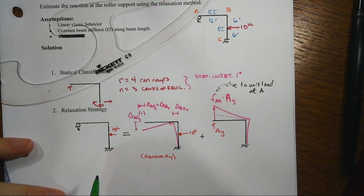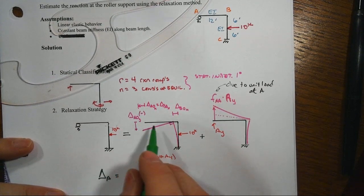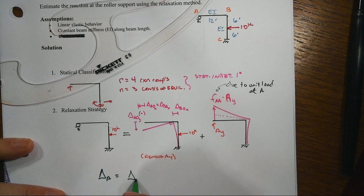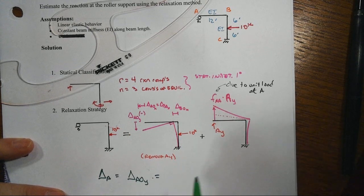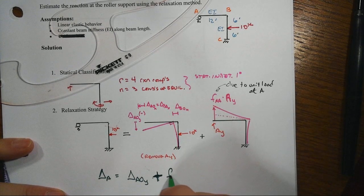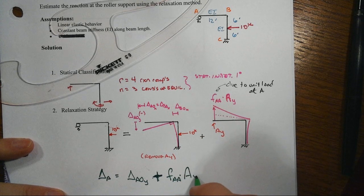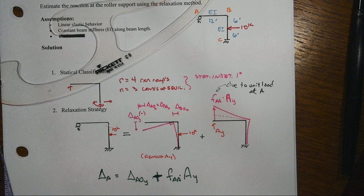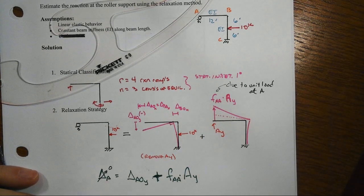Compatibility here being that delta A in the original structure is going to be mathematically composed of the sum of what happens in the primary structure with the primary load plus what happens there, and that's going to turn out that delta A is going to be zero.